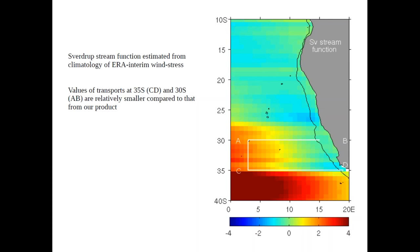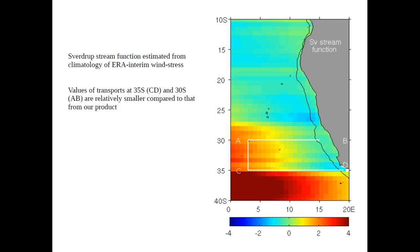This is not surprising because the Sverdrup stream function is a classical and oversimplified approach. It misses the inflow from the Indian Ocean, does not account for friction, and it is also challenging to determine how far the gyre extends to the bottom. A similar study by Gray and Riser 2014 also found very small Sverdrup values compared to their estimates. So Sverdrup balance may give an overall idea of ocean dynamics but is not sufficient to explain Benguela current transport.